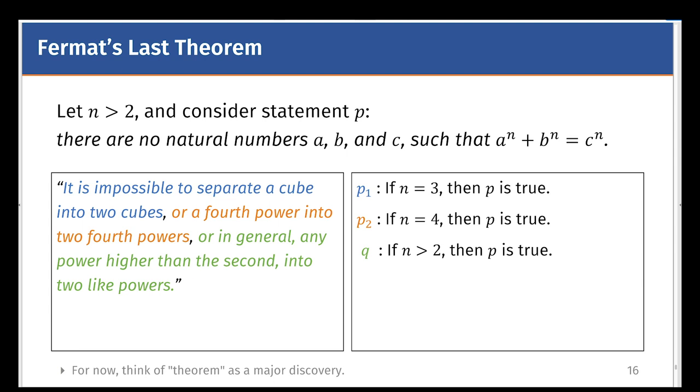Mathematicians have also verified this for other values of p. But at the time, it was not sure when the statement p is true for all n greater than 2. This is what you call Fermat's Last Theorem.